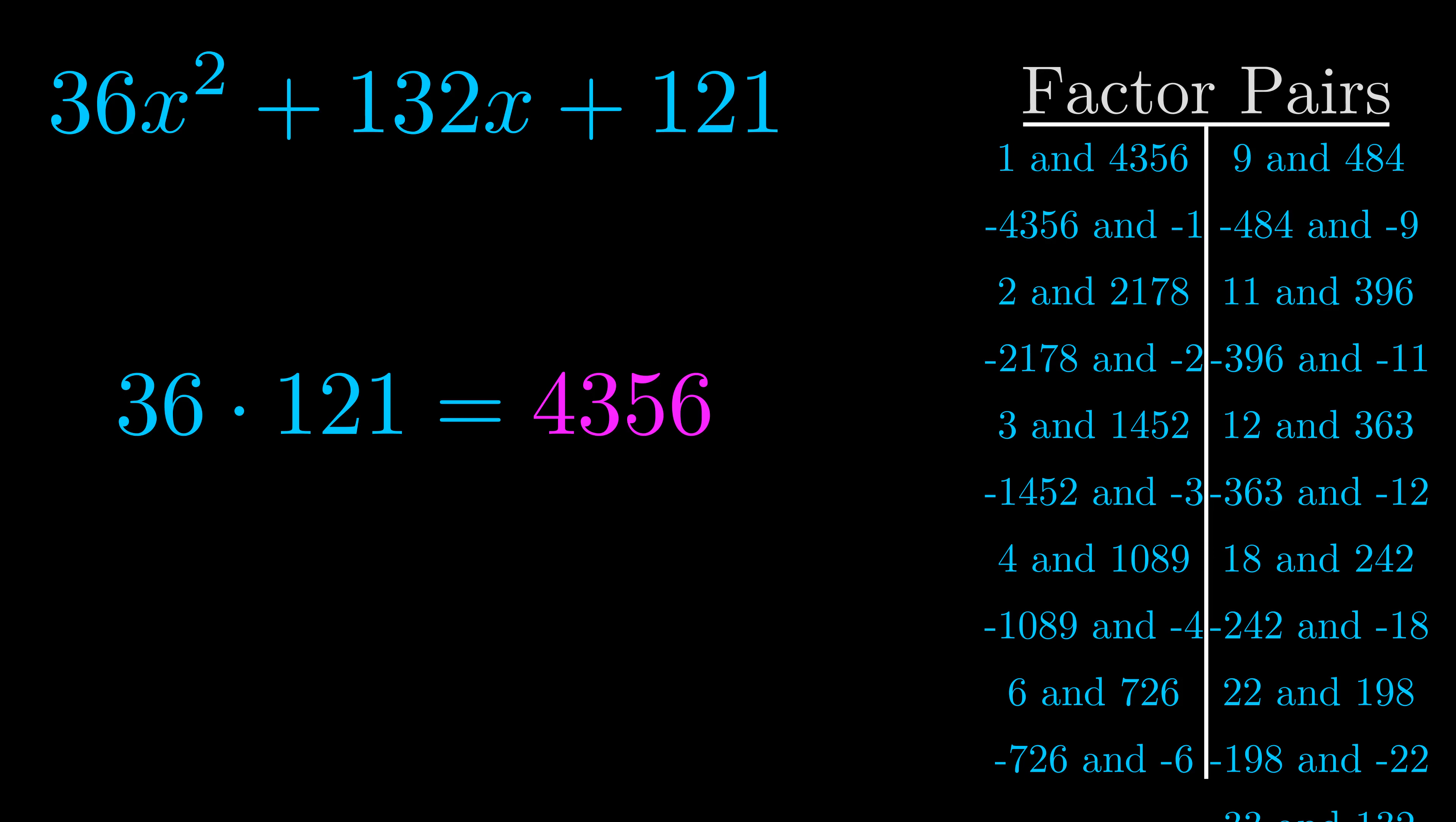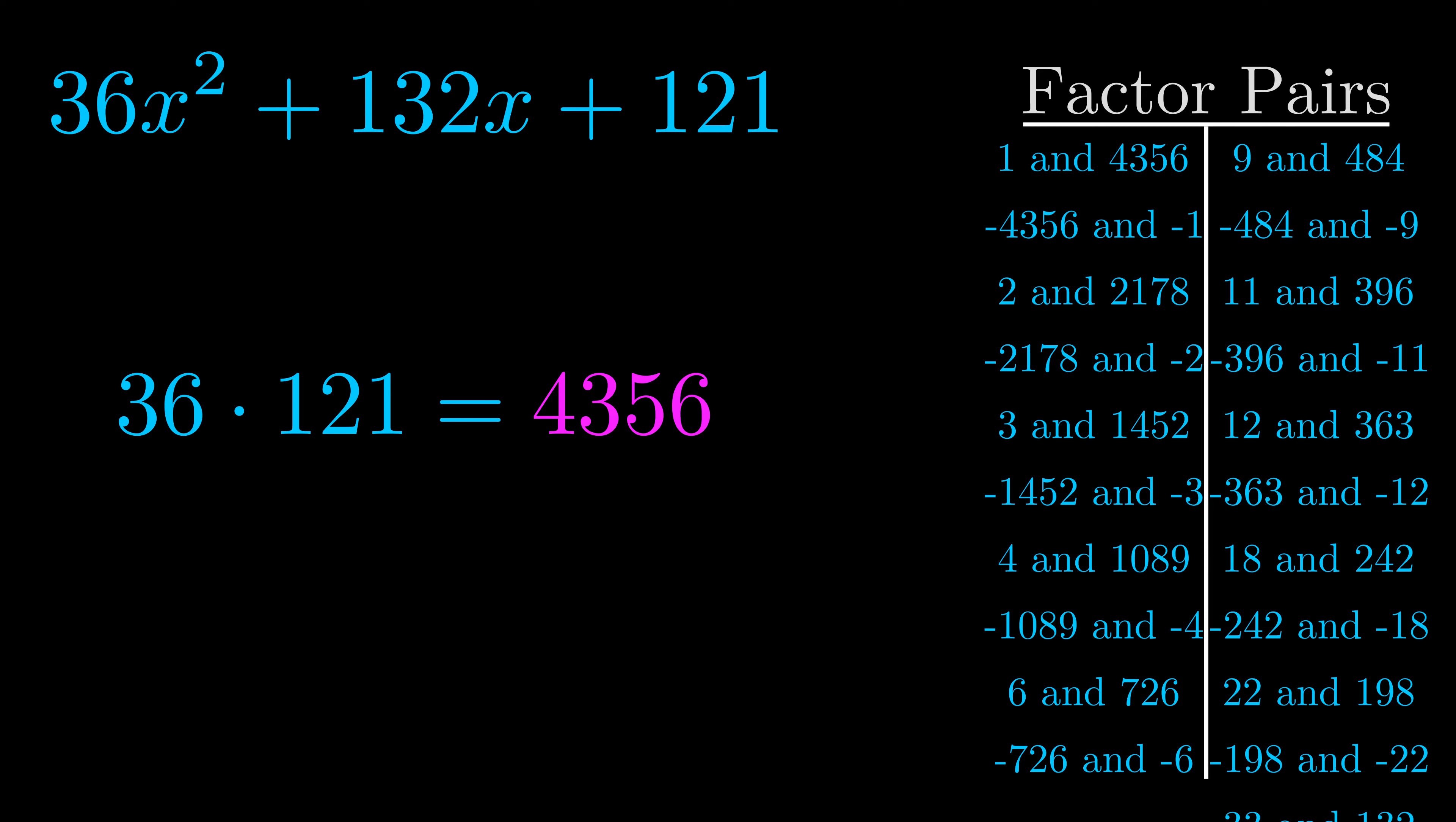Now once you have these factor pairs, the goal is to find which of these pairs adds to the b value. The b value is the coefficient on the x term. That's the middle term, the one that we haven't done anything with yet. And really this is the only factor pair that we need.